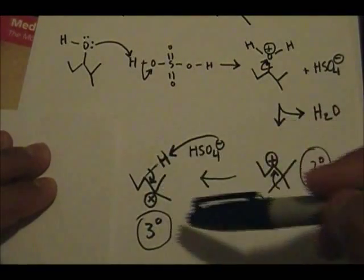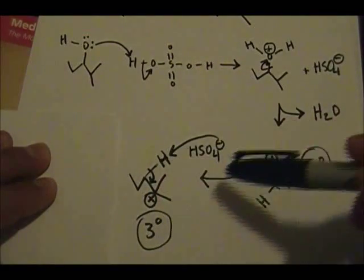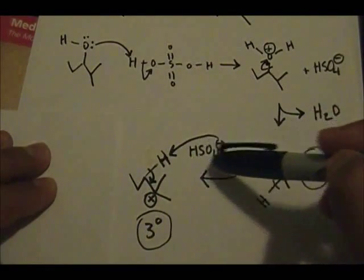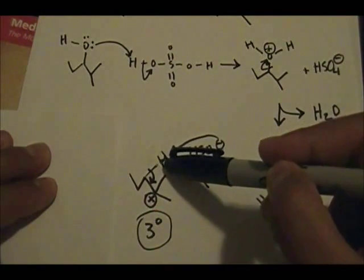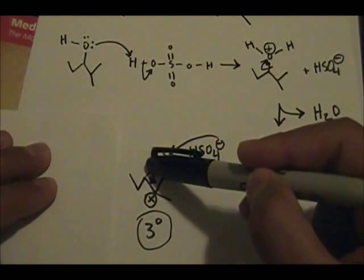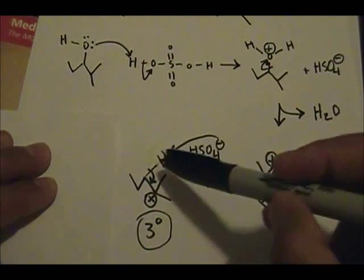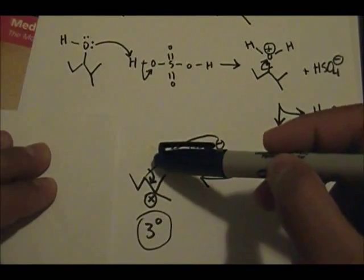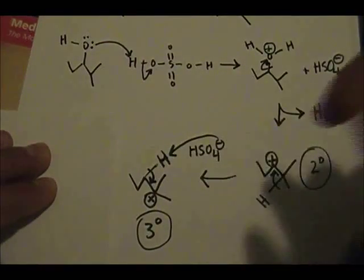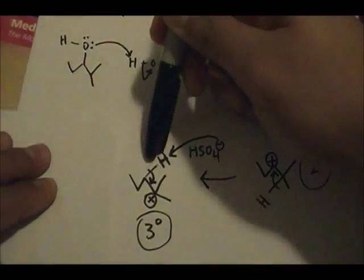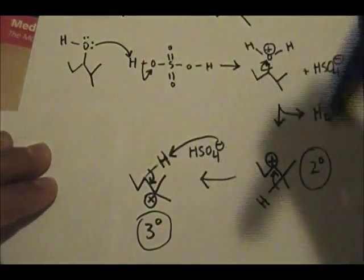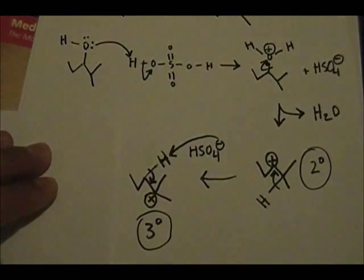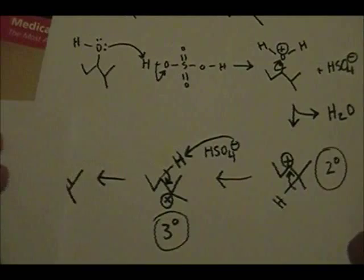This is where the elimination step comes into play. HSO₄⁻ picks up a hydrogen, you do the elimination step where this bond forms a double bond, and you form your alkene product.